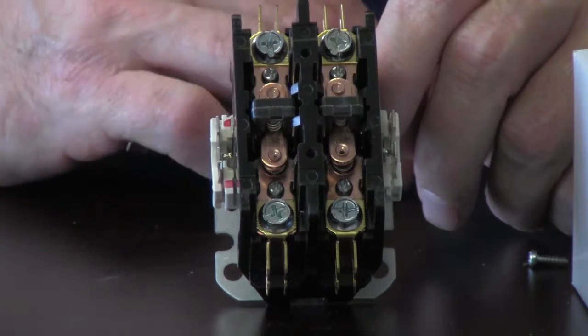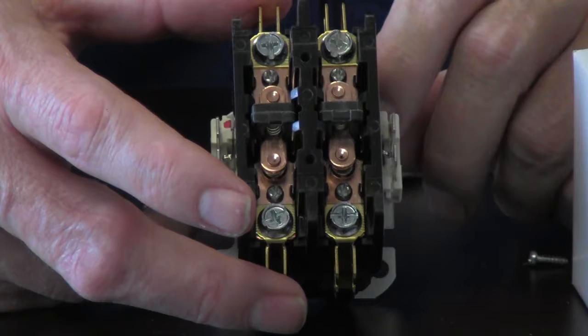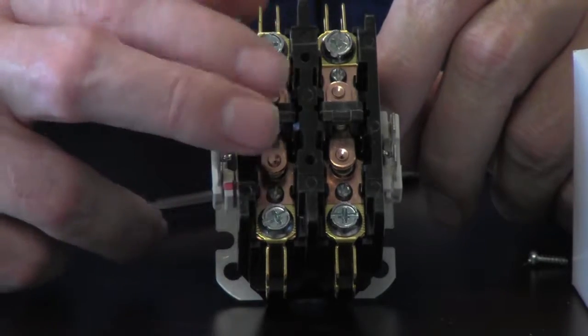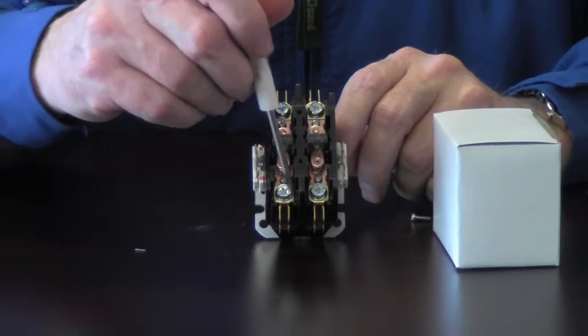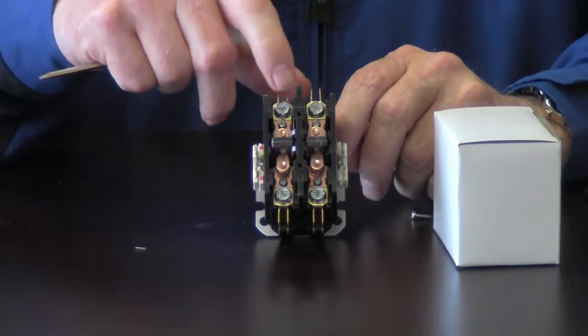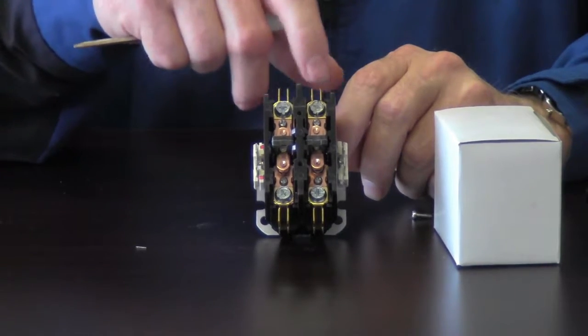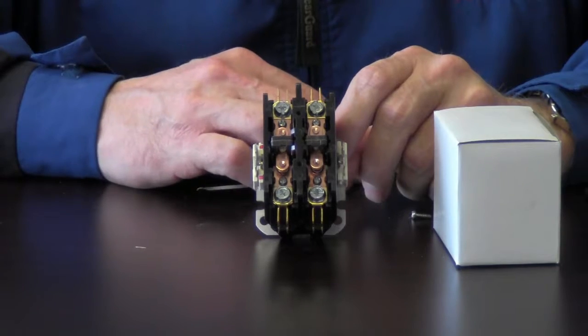One thing you want to make sure that you do before messing with this is definitely make sure your power is off to the unit because you got a lot of voltage coming into this. This here would be your line voltage. So you're going to have 120 on this side, 120 here. Of course when it closes, then you got the 120 on either one. Most of your units are going to be a 240 volt unit.